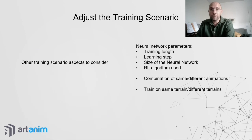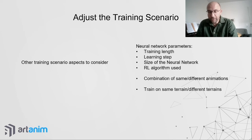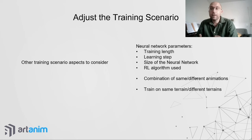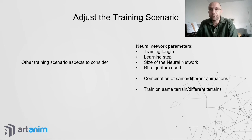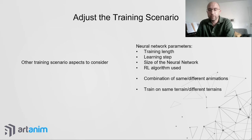Early termination was proposed in Deep Mimic and is now almost universally adopted in physics-based character animation. Other training scenario aspects to consider include the neural network size, training length, and the reinforcement learning algorithm used. You can also explore whether to train on a limited animation set or a larger one, and whether to train on fixed or varied terrains to learn to handle obstacles.